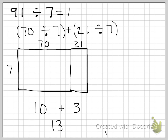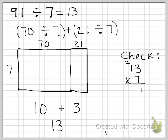Now, remember to check your work — you can always do divisor times your quotient, and it should give you your dividend. So let's check: 7 times 13. 3 times 7 is 21, carry the 2. 7 times 1 is 7, plus 2 is 9. Did we get our dividend? Yes, we did. So we must have gotten the right answer. This lesson is all about breaking apart your dividend into two numbers that are divisible — that can be easily and evenly divided into — by your divisor.